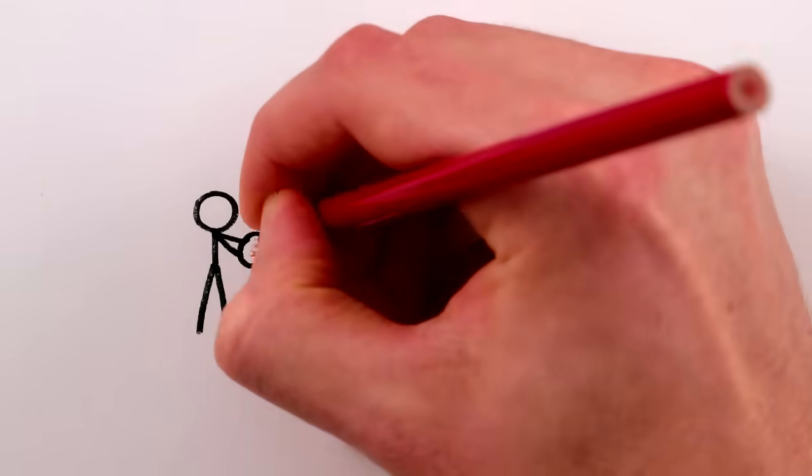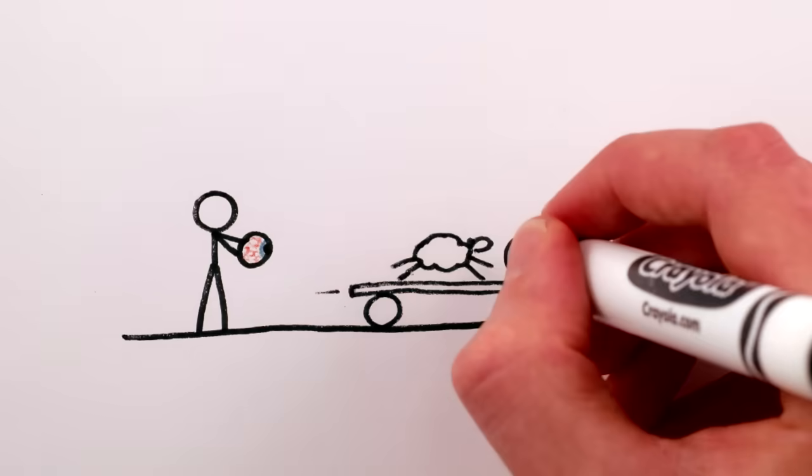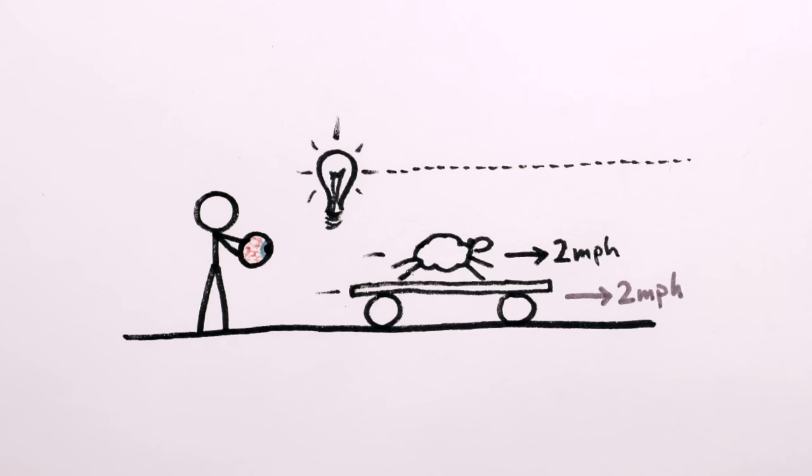So just because to our eyes the earth looks flat, velocities look like they simply add together, and light looks like it doesn't attract gravitationally, is that an excuse to mislead ourselves, and our children, about the true nature of things?